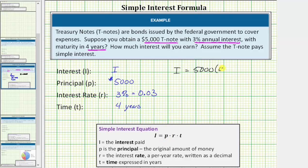Times R, the annual interest rate as a decimal, 0.03, times T, time in years, which equals four.